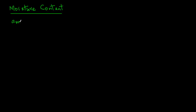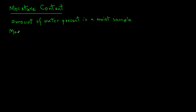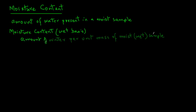Moisture content is the amount of water present in a moist sample. There are a couple of ways that we can express moisture content. One is moisture content wet basis. This is the amount of water per unit mass of moist or wet sample.